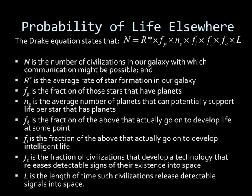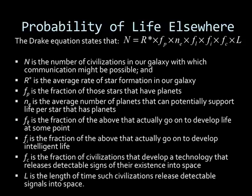The Drake Equation states: N equals R-star times Fp times Ne times Fl times Fi times Fc times L. N is the number of civilizations in our galaxy with which communication might be possible. R-star is the average rate of star formation in our galaxy, which we said was two or three a year. Fp is the fraction of those stars that have planets. N-sub-e is the average number of planets that can potentially support life per star that has planets. F-sub-l is the fraction of those that actually go on to develop life — just because it can potentially support life doesn't mean it happens. F-sub-i is the fraction that actually goes on to develop intelligent life. F-sub-c is the fraction of civilizations that develop a technology that releases detectable signs of their existence into space. And L is the length of time such civilizations release detectable signals into space.